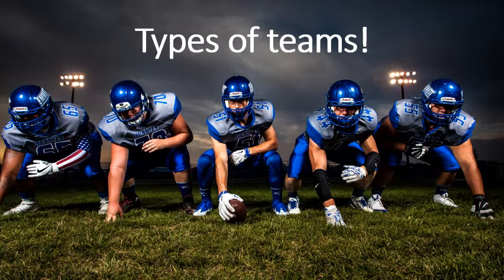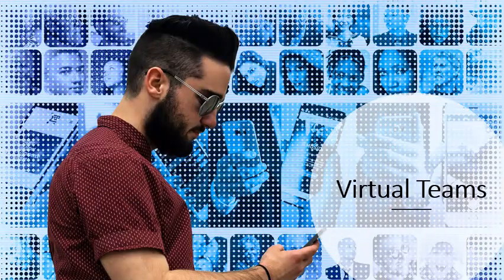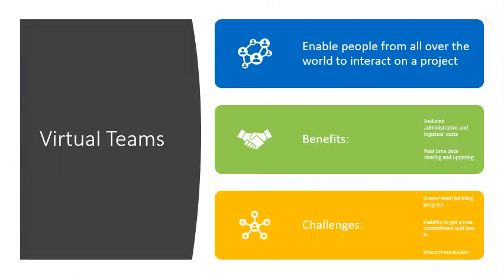First, let's look at the different types of teams. The first type are virtual teams. Virtual teams enable people from all over the world to interact on a project. Some of the benefits include reduced administrative and logistical costs, and real-time data sharing and updating. With a virtual team, you can have slower team-building progress, an inability to get a true commitment and buy-in from team members, and there's always potential for miscommunication. However, virtual teams can be very effective. It's a good idea to have periodic face-to-face meetings with virtual team members on a project to grow relationships and strengthen the project.